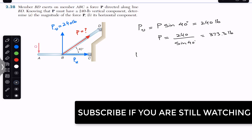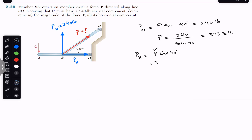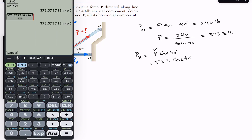The horizontal component is adjacent to the angle, so it is the cosine component: P cos of 40 degrees. Now that P magnitude is known as 373.3, we compute 373.3 times cos of 40, which gives approximately 286 pounds. So the horizontal component is approximately 286 pounds.